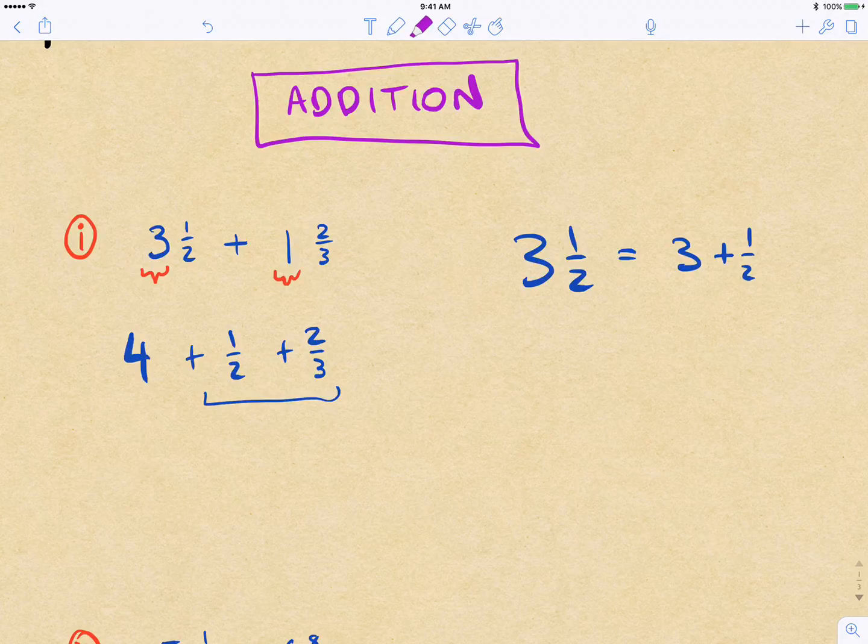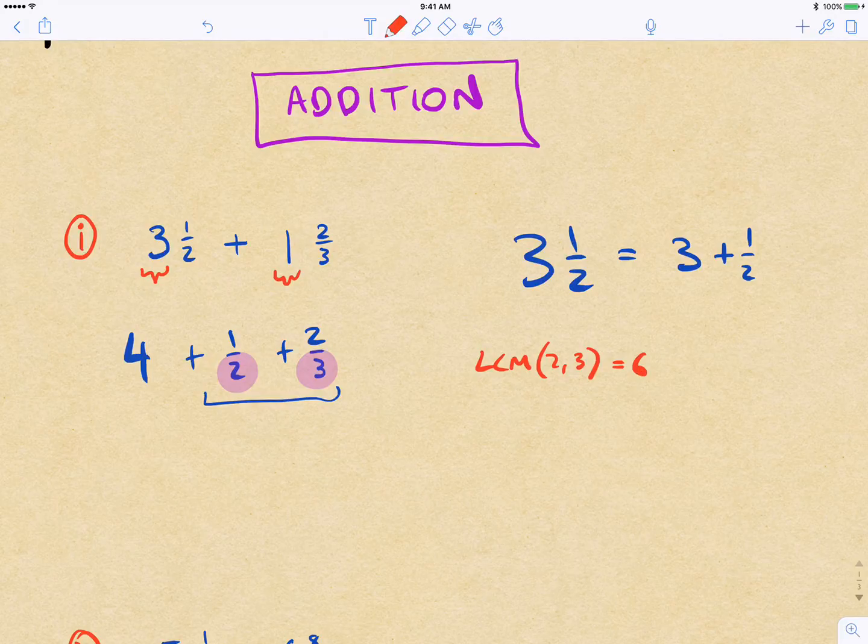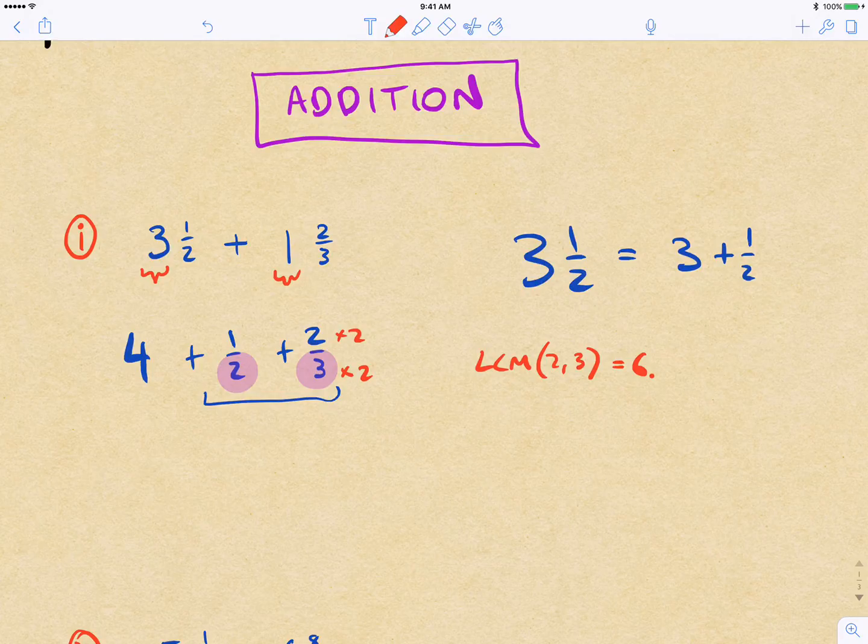Remember, in order to be able to add these together, we need a common denominator. So we have the lowest common multiple of 2 and 3 is 6, and so we're going to convert both of these to sixths. In the case of thirds, we multiply top and bottom by 2 in order to get our equivalent fraction. And in the case of halves, we multiply the top and bottom by 3.